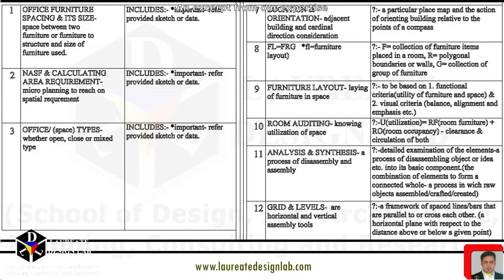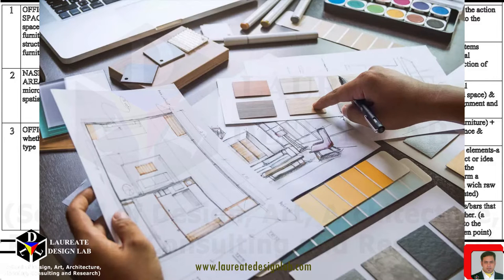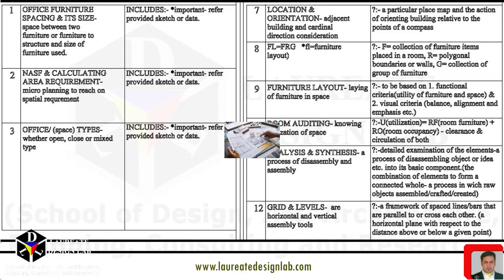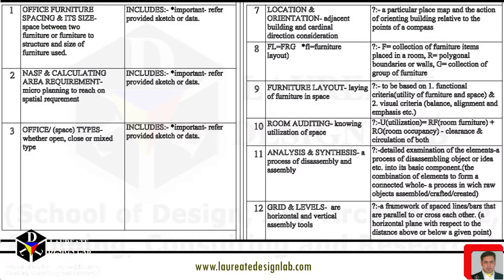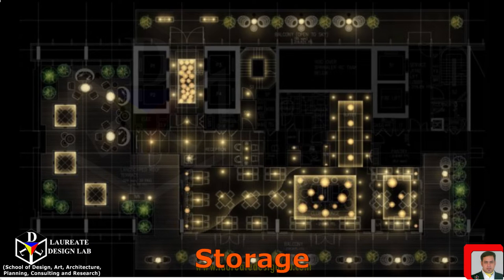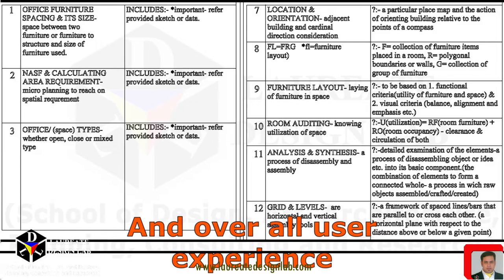Room auditing in terms of space use is the process of evaluating and assessing the functionality and efficiency of a room or space. This typically involves analyzing how the space is currently being used, identifying any issues or inefficiencies, and making recommendations for improvements. Room auditing can be done for various types of spaces such as office, living, and public spaces. It often includes evaluating factors such as furniture layout, lighting, acoustics, and storage, as well as assessing how well the space meets the needs and activities of the people using it. The end goal of room auditing is to improve the functionality, efficiency, and overall user experience of the space.